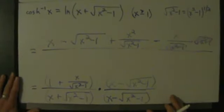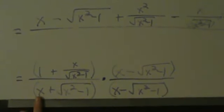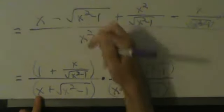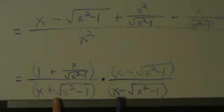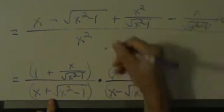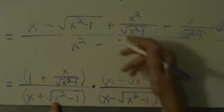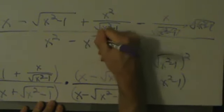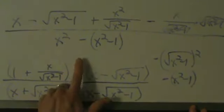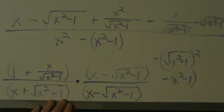Now we FOIL the bottom. First gives us x squared. Outer is minus x root x squared minus 1, and Inner is plus x root x squared minus 1 — those cancel. Last is positive times negative, giving a minus sign, and root x squared minus 1 squared equals x squared minus 1. So we have minus that quantity, meaning minus x squared minus 1 — we need the parentheses because of the minus sign.